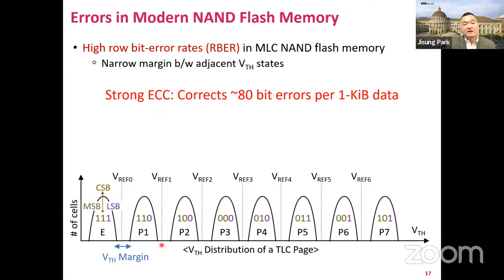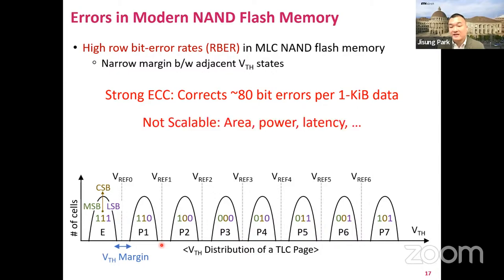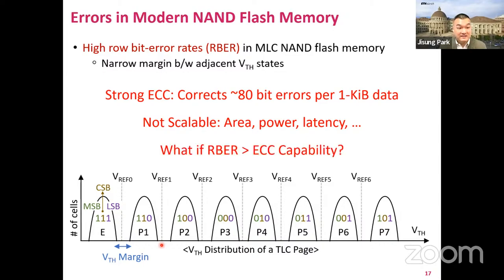Due to this high raw bit error rate, modern NAND flash-based SSDs commonly adopt very strong ECC — for example, which can correct up to 8 bit errors per 1 kilobyte of data. But this is not scalable at all, as the stronger the ECC, the higher the latency, power, and area overheads. It means we cannot increase ECC capability without limitation. So in modern NAND flash-based SSDs, it frequently happens that a read incurs more bit errors than the ECC capability, which causes data loss if there is no countermeasure.